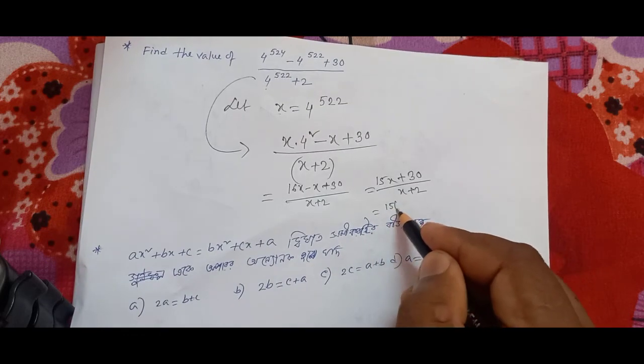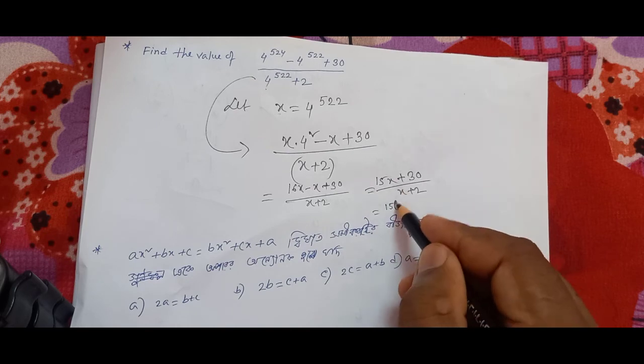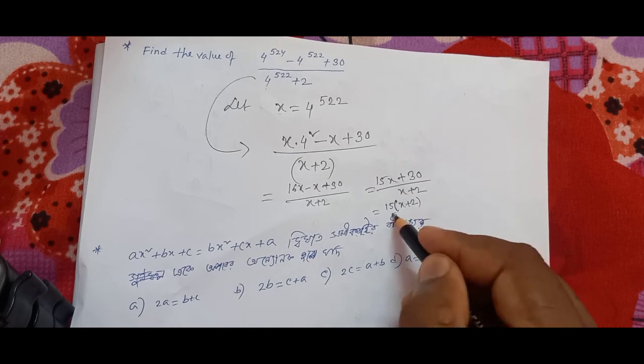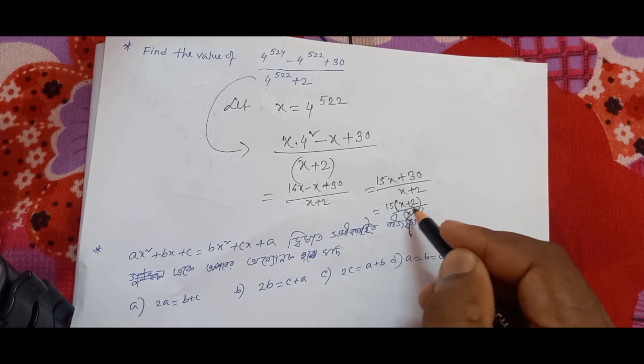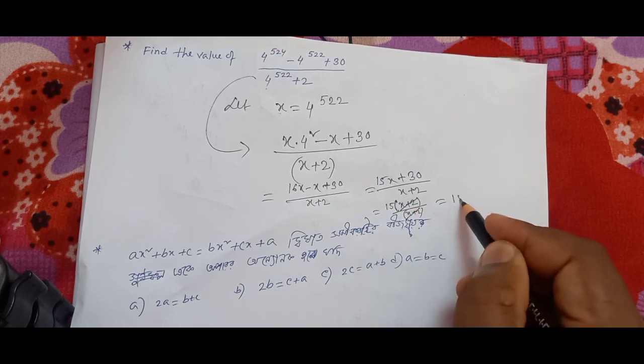If you take common 15, we get x plus 2 by x plus 2. The x plus 2 terms cancel.